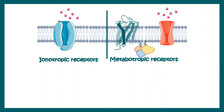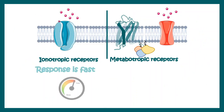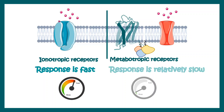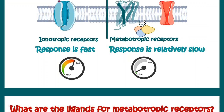Before starting, we should understand that ionotropic receptors are important for fast response, whereas metabotropic receptors are generally slow in terms of responsivity. We would understand why that is important in a moment.